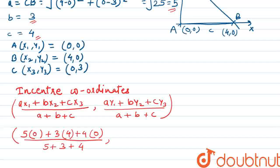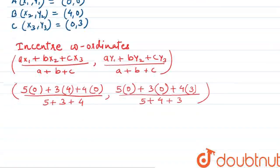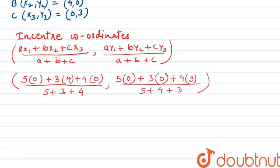For the y-coordinate: a value 5 × y1 value 0, plus b value 3 × y2 value 0, plus c value 4 × y3 value 3, divided by 5 + 3 + 4. So we get (0 + 0 + 12) / 12 = 12 upon 12. Both coordinates come out to 1, so the final answer is (1, 1).